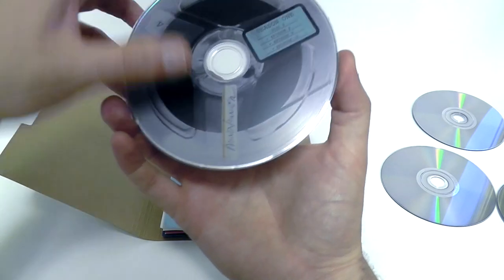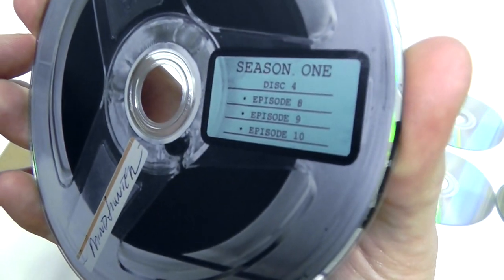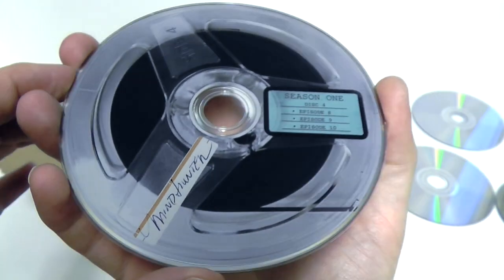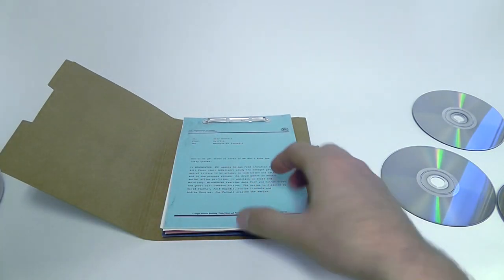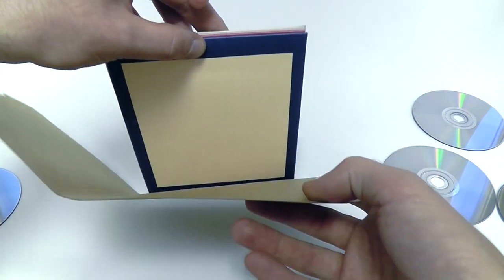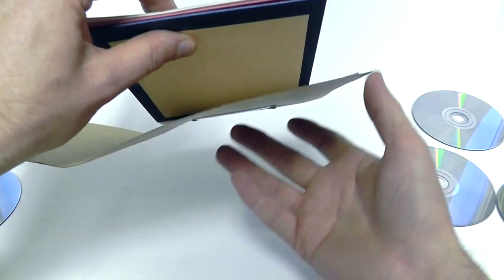Here we got the last one. Disc number four with episodes eight, nine and ten. So yeah this is the full first season of Mindhunter. Absolutely gorgeous design. I don't think there's a lot on the back. You can see the back of those holders and nothing on the back there either. And then the hardboard is just all blank.